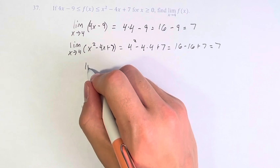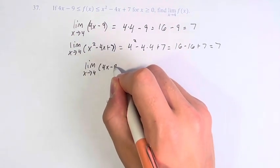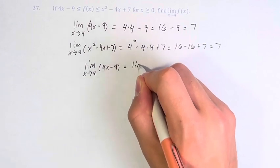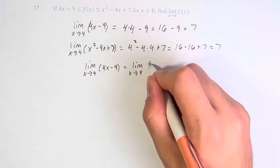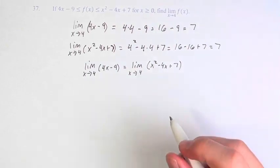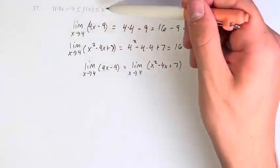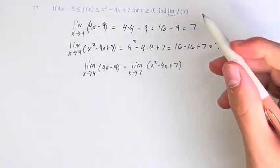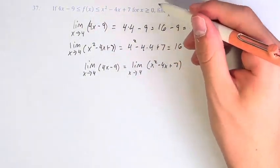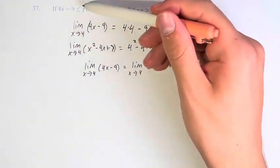Therefore, since the limit as x approaches 4 of 4x minus 9 is equal to the limit as x approaches 4 of x squared minus 4x plus 7, and the function f(x) is between these two functions for x greater than or equal to 0, which means that when x is equal to 4 and x is near 4, it's between these two functions.